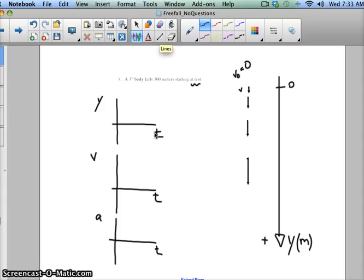So since I've made down the positive direction, my object is going to speed up while moving in the positive direction, which looks like that. And I don't know the time T, but I know it's going to get to a 300 meter position. So I'll put my 300 there. And my velocity graph is going to look like this, and my acceleration time graph is going to look like this.